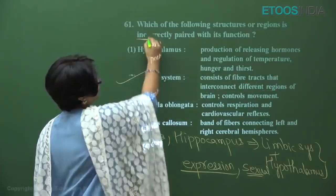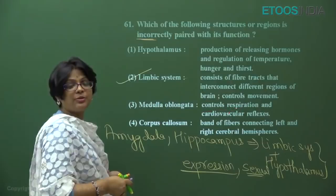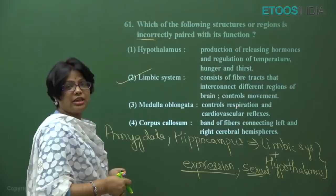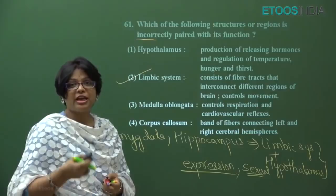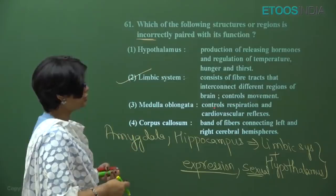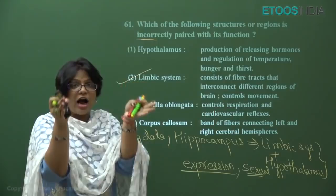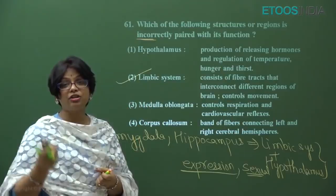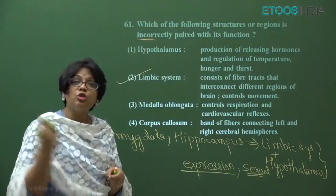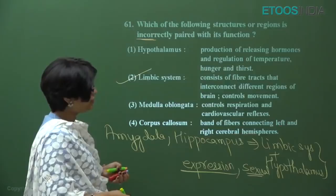Medulla oblongata controls respiration — the respiratory rhythm center is in medulla oblongata — correct. It also regulates cardiovascular reflexes, heart rate, blood pressure, and gastric secretion centers. Corpus callosum is a band of nerve fibers connecting the left and right cerebral hemispheres, found in eutherian placental mammals — this is also correct. Both options one, three, and four are correctly matched — only option two is wrong, answer is two.